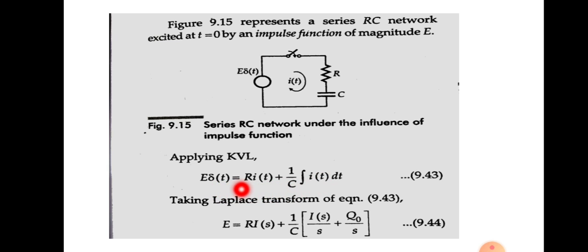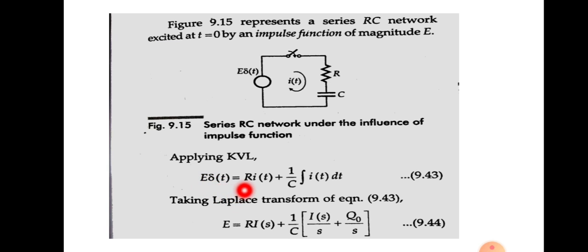We use the Laplace transform to solve this equation because it contains an integral term, making it a differential-integral equation. Converting it to an algebraic equation via Laplace transform: E·δ(T) on the left side — the Laplace transform of impulse function δ(T) equals 1, and E is a constant, so the Laplace transform gives E. The Laplace transform of I(T) is I(S). For the integration term, the Laplace transform of an integral function equals the Laplace transform of the function divided by S, plus the initial condition.